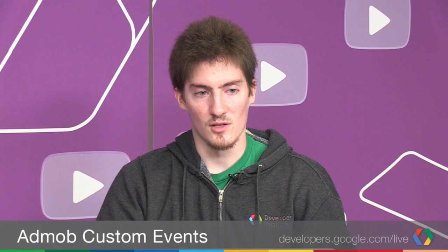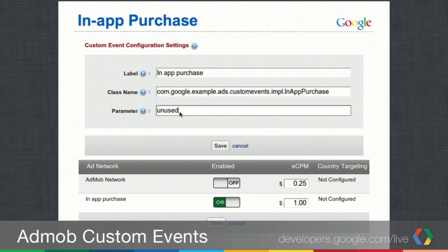The final example is an in-app purchase custom event that launches an in-app billing flow, asking the user if they want to make a purchase — for example, to remove ads. The label is 'In-App Purchase', the class name is the InAppPurchase class, and the server parameter is 'unused'. In the network configuration, in-app purchase is set higher, and AdMob is turned off so that if the in-app purchase flow doesn't apply, no ads are shown.